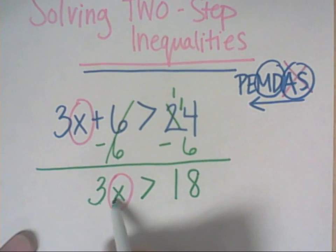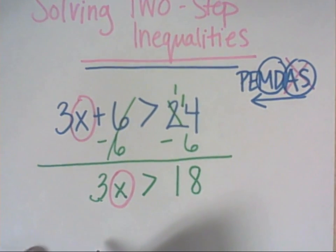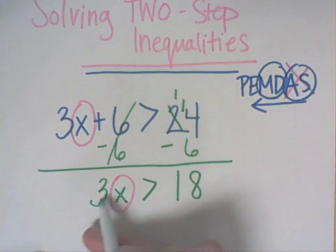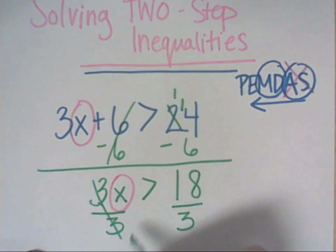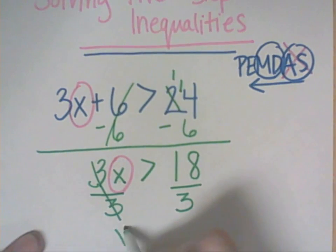Since they're side by side, that means that they are multiplying. But to move it, we have to do the inverse. The inverse is the opposite. So the opposite of multiplying by 3 is dividing by 3. We have to do it on both sides to keep it balanced. 3 divided by 3 cancels. Leaving us X is greater than.